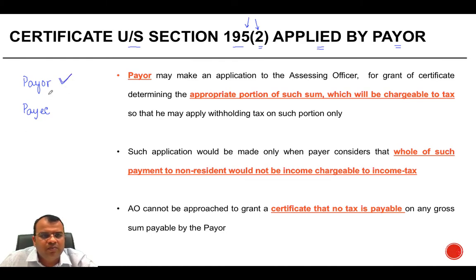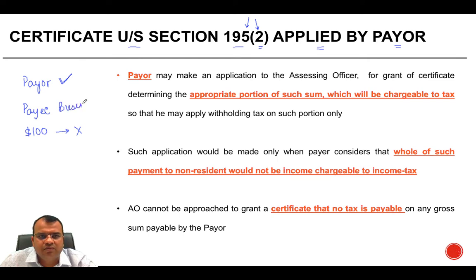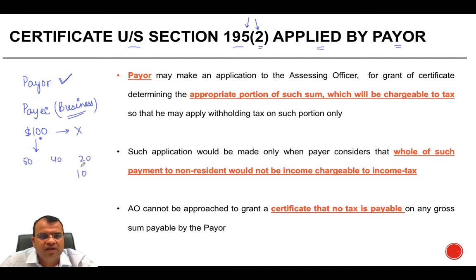Suppose the payer has to make a payment of $100 to a person called X, and this payment is in the nature of business income. He does not know whether tax should be withheld on the full $100, because being business income there may be some expenses which have to be allowed as a deduction. So in order to determine what portion is chargeable to tax — whether it is $50, $40, $20, or $10 — he can make an application to the Assessing Officer requesting him to determine the appropriate amount chargeable to tax.